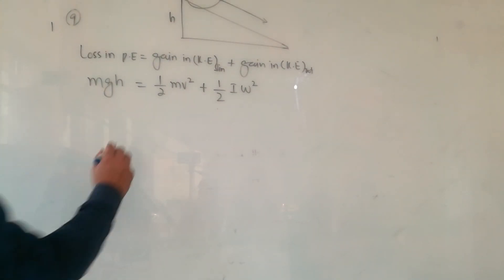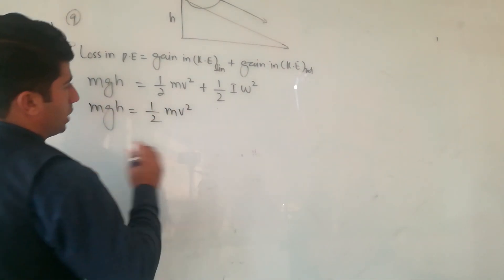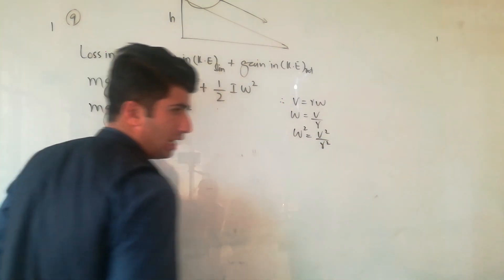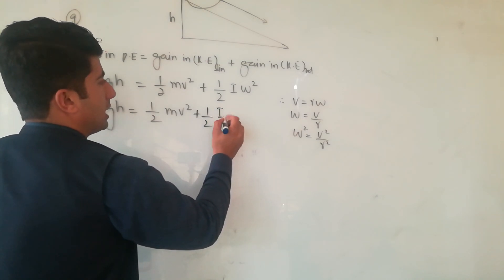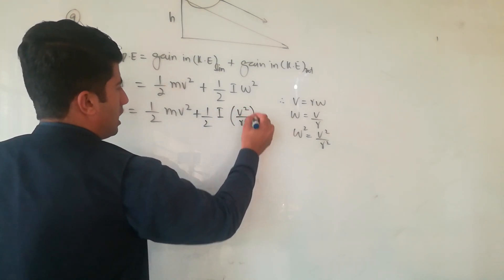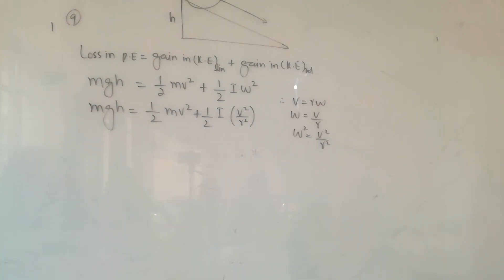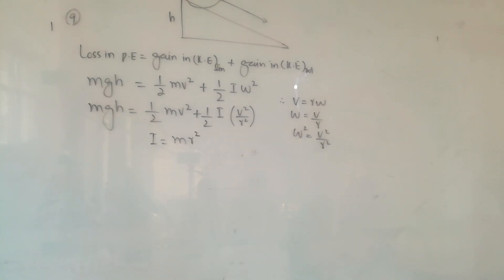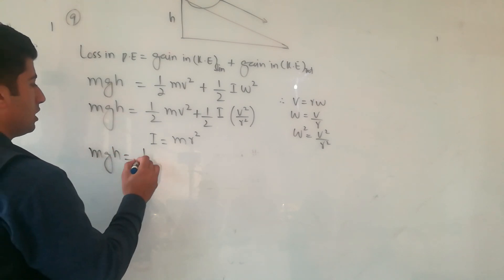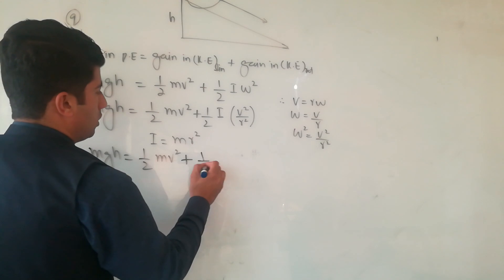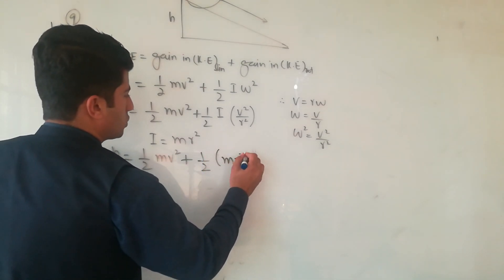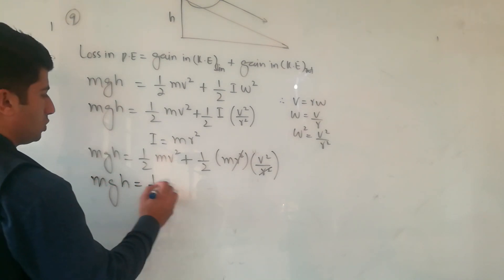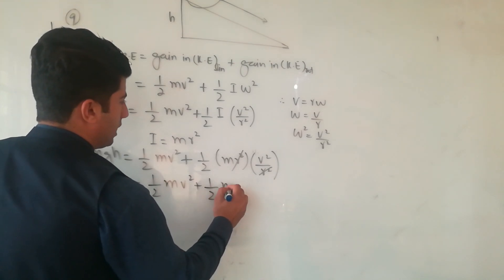So MGH equals (1/2)MV² plus (1/2)IV² divided by R². For a hoop, I equals MR², so R² cancels out. Now MGH equals (1/2)MV² plus (1/2)MV².